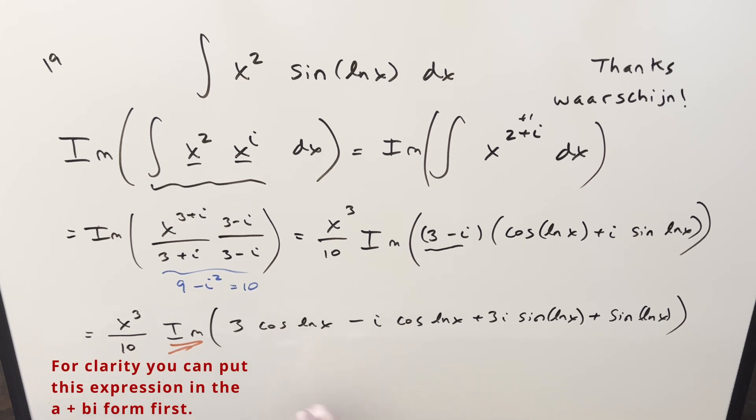We have some stuff that's just real. 3 cosine ln x, real, that's going away. Sine ln x, this is real. Of course, you could factor this up, but it's pretty easy to see that what we're going to be left with for our imaginary part is going to be 3 sine ln x minus cosine ln x.